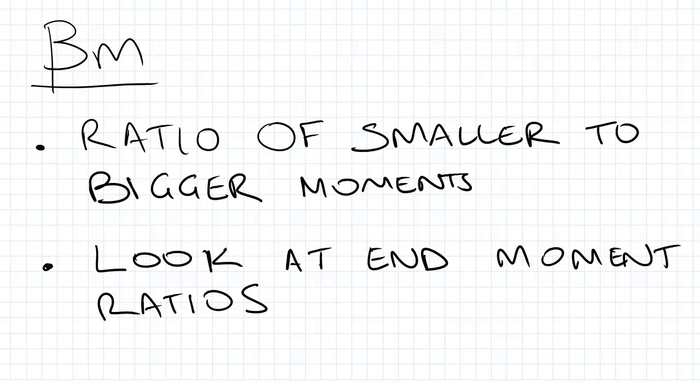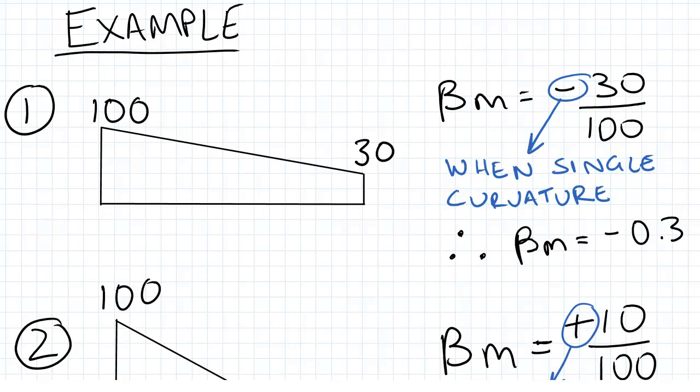Now beta m, the important thing to remember about this is it's the ratio of the smaller to bigger moments, and you want to look at the end moment ratios. These two rules are critical to the calculation of beta m.